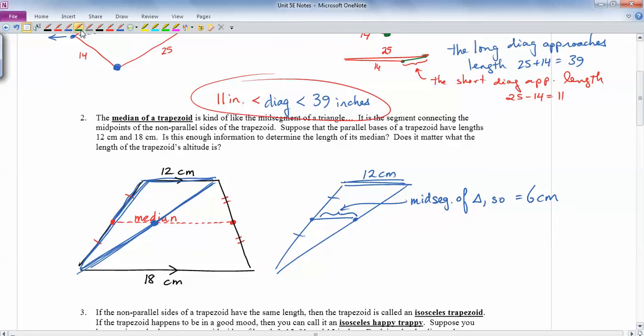Okay. So it turns out that this thing right here is a mid-segment of the triangle. So we know that mid-segments are half of the third side. So this equals 6 centimeters. And if I look at this triangle right here, this piece is also a mid-segment. So it's going to be half of its third side, which is 18. So this is going to be 9. So over here we get 9. Over here we get 6. So it turns out that the median equals 6 plus 9, which is 15 centimeters.